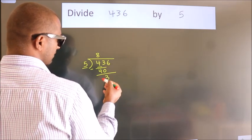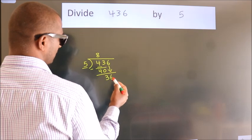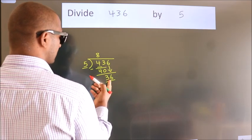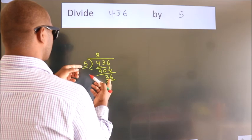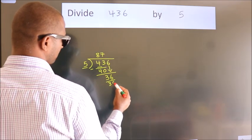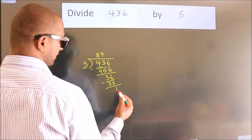After this, bring down the beside number. So 6 down. So 36. A number close to 36 in 5 table is 5 7s 35. Now we subtract. We get 1.